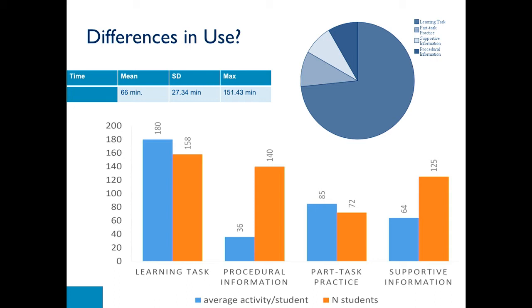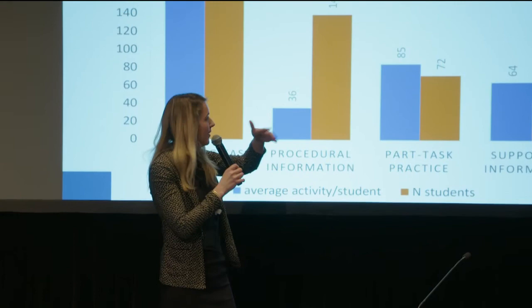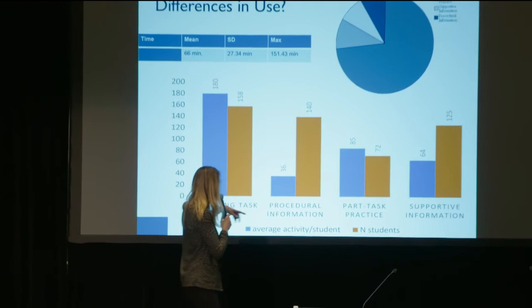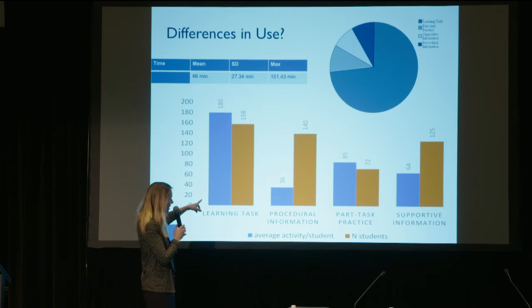Studying use, we saw that on average people spent more than an hour on it — we estimated an hour and a half, so an hour is quite okay. We also looked at the distribution of the different components. Looking at the course activity, a lot of people used the learning tasks, which is logical since they had a sequence to follow. But looking at the different support components — part-task practice, supportive information, and procedural information — they were more or less equally used. Different students chose different things.